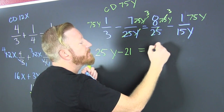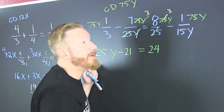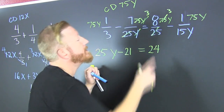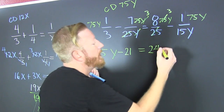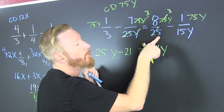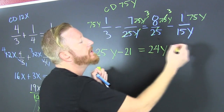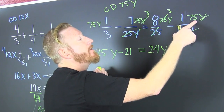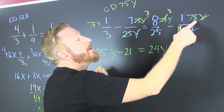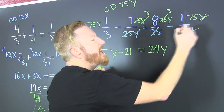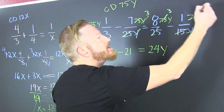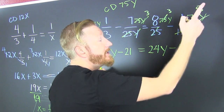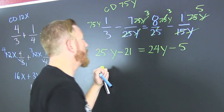3 times 8 is 24. If I make any mistakes in here, post it down below. Then 24y, because that didn't have a y in it. And then 75 goes into 75 over 15 — that's 5 times. So that's minus 5y, and then the fractions are all gone.